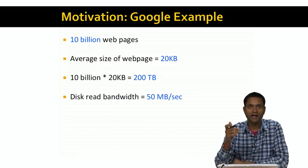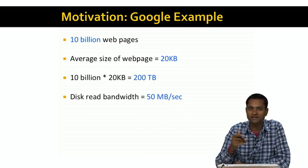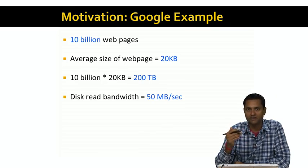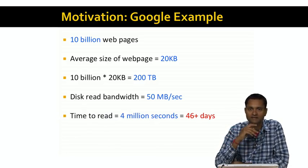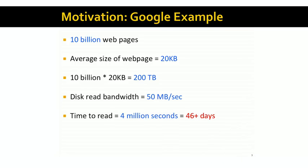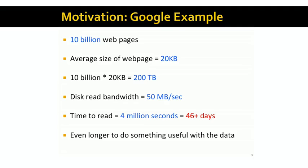The disk bandwidth for most modern SATA disks is around 50 megabytes per second. So we can read data at 50 megabytes per second. How long does it take to read 200 terabytes at 50 megabytes per second? Some simple math gives the answer: four million seconds, which is more than four to six days. This is an awfully long time, and this is just the time to read the data into memory. To do something useful with the data, it's going to take even longer. Clearly this is unacceptable — you can't take four to six days just to read the data. So you need a better solution.